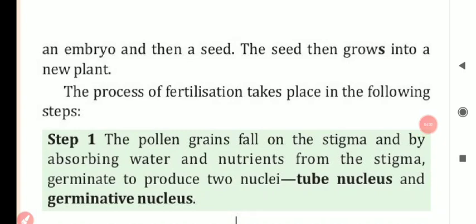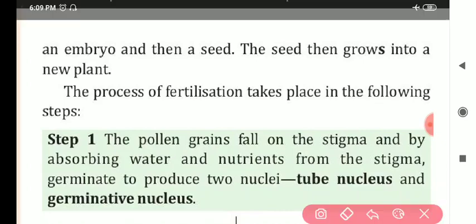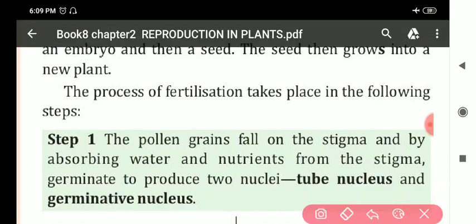In fertilization, zygote is formed when male gamete and female gamete fuse together. From the zygote, an embryo is formed, and the embryo turns into a seed, and the seed grows into a new plant.